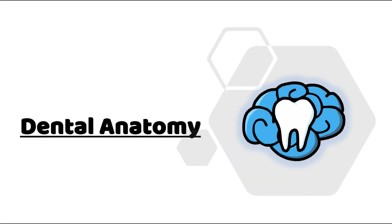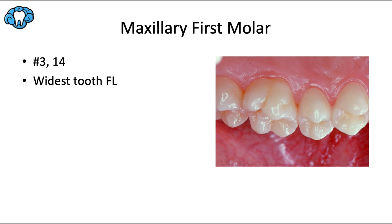Hey everyone, Dr. Ryan here, and welcome back to our dental anatomy series. This video is dedicated to the maxillary first molar. We've finally made it to the molars. Using the universal tooth numbering system, this includes number 3 and number 14. This is the widest tooth faciolingually in the entire mouth — an important fact to know for the board exam.